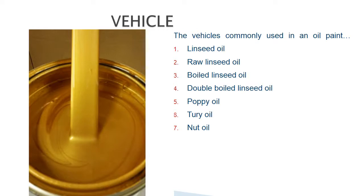Vehicles used in paint are of oil type: linseed oil — including raw linseed, boiled linseed, and double boiled linseed oil — as well as poppy oil and nut oil. These vehicles are added along with the base.